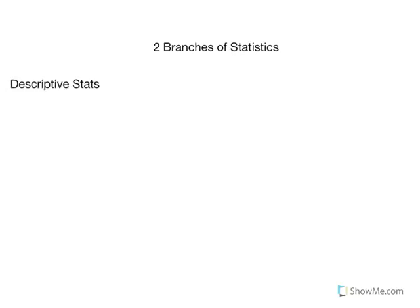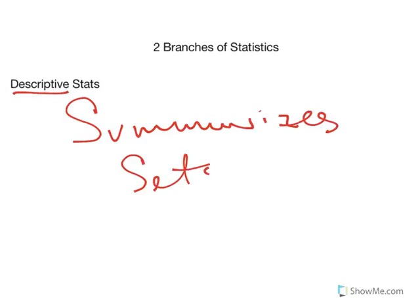The first branch of statistics is called descriptive statistics. Descriptive statistics does pretty much what it sounds like — it describes and summarizes statistics, particularly sets of numbers. It takes a large number of numbers and condenses it down into something that's easy to understand without having to think about every single individual score in a group.